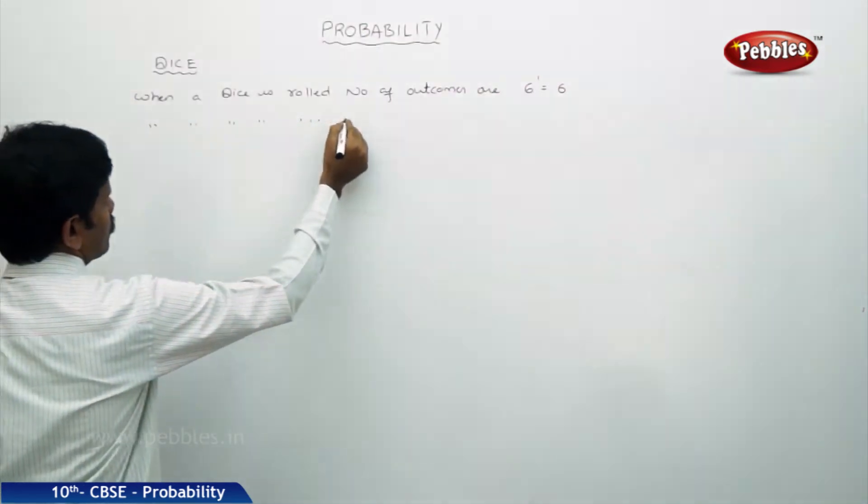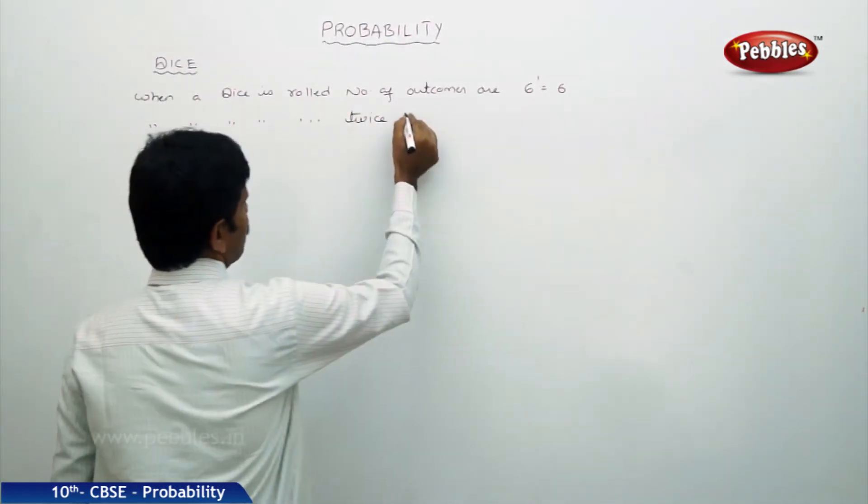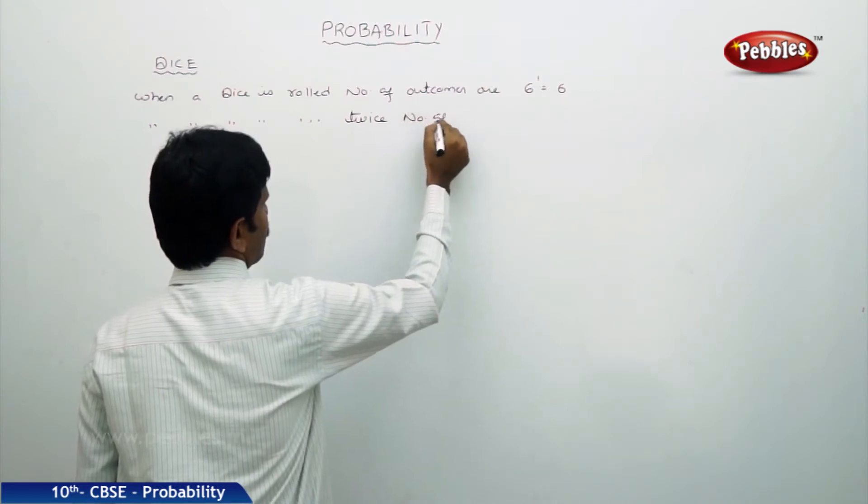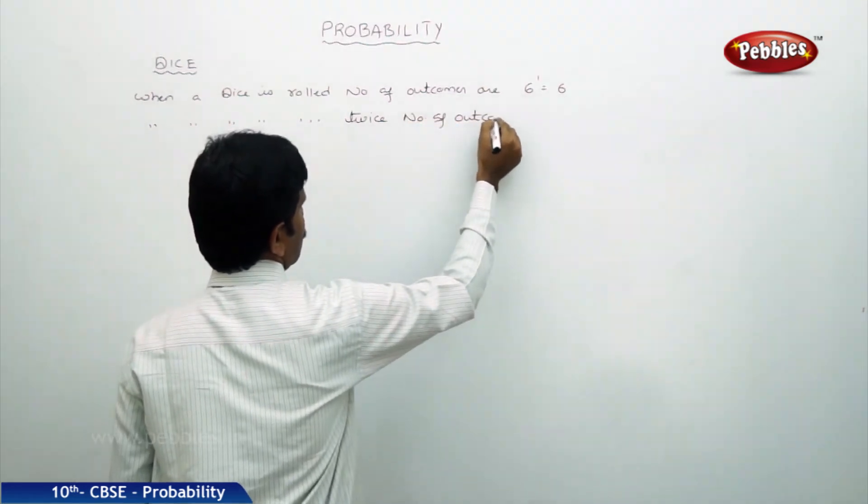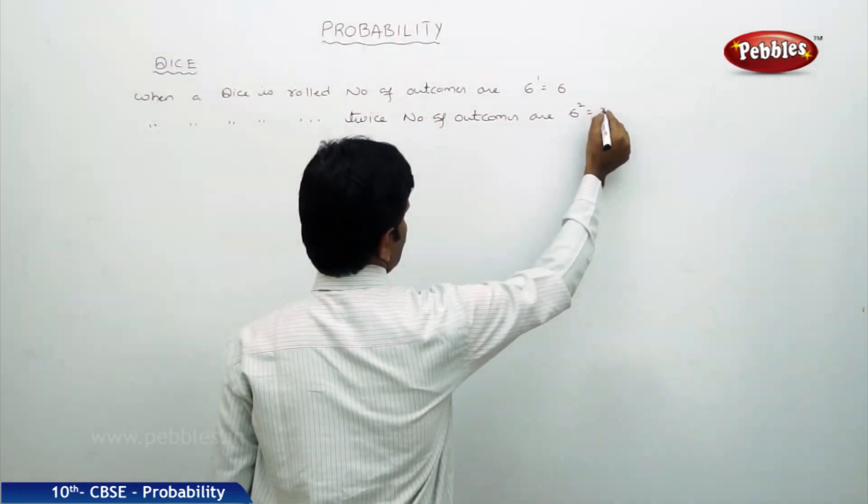Next, when a dice is rolled twice, the number of outcomes are 6 to the power 2, that is 36.